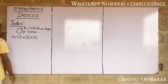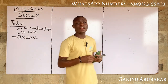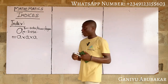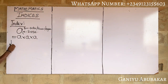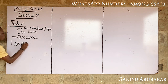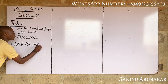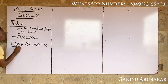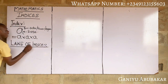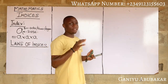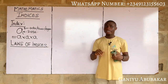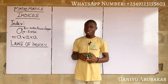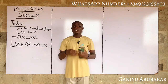At this point, let's look at the several laws that govern indices one after the other. Basically there are about seven laws of indices, and I'll take my time to cover each law one after the other. Let's start with the first law called the Multiplication Law.